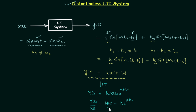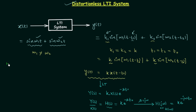Now we will replace s by jω. We have already obtained the transfer function, but if we replace s by jω we will have the transfer function after performing the Fourier transform. So we will have H(jω), or simply H(ω) for simplicity — there is no need to write j alongside it. It will be equal to k·e^(−jω·t0). This is the transfer function for an LTI system which is distortionless: H(ω) = k·e^(−jω·t0).